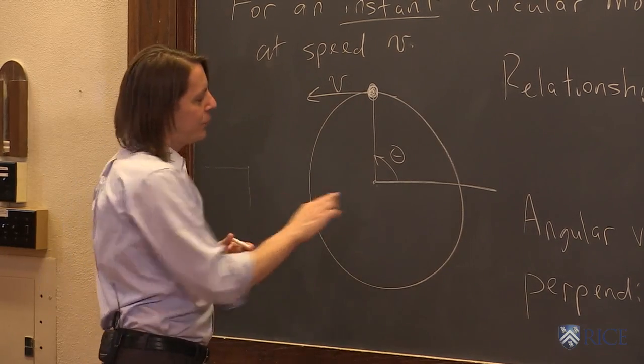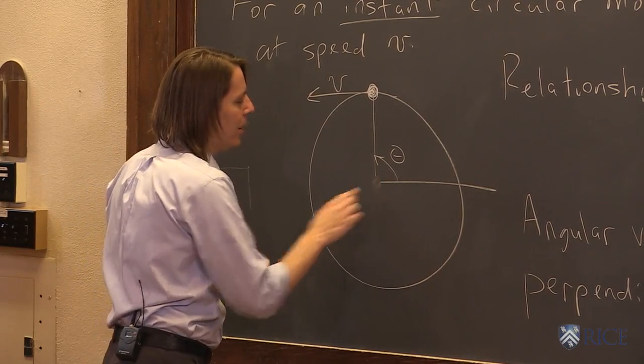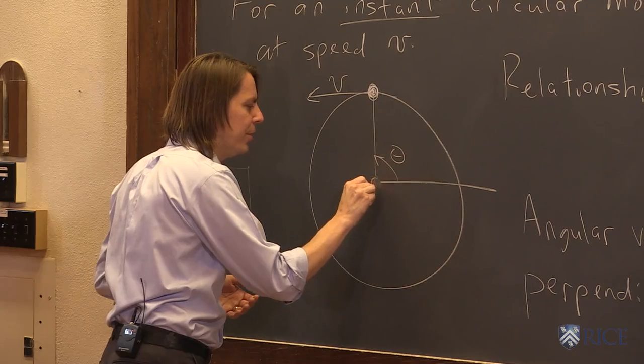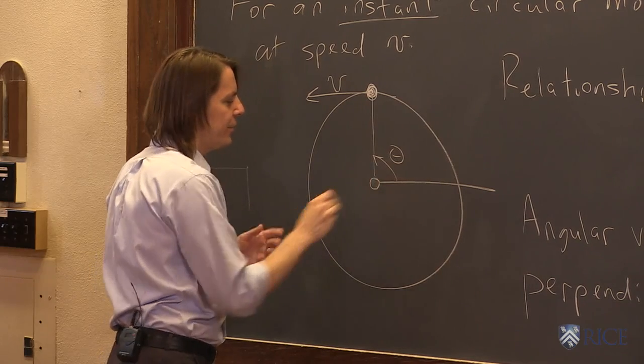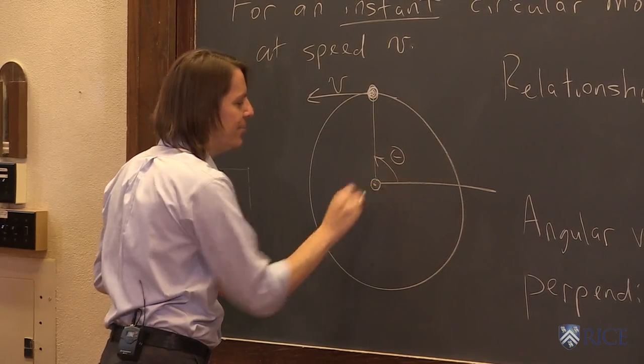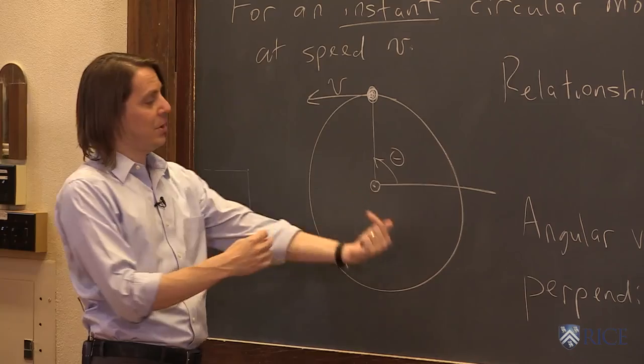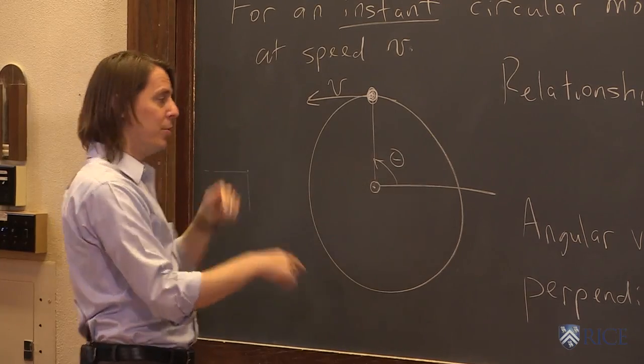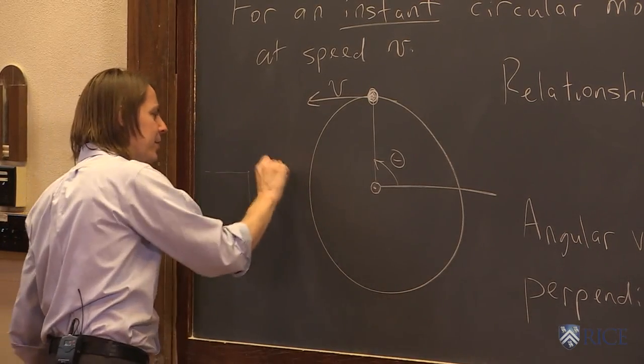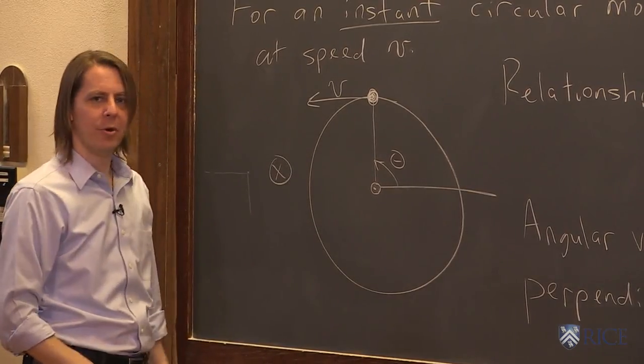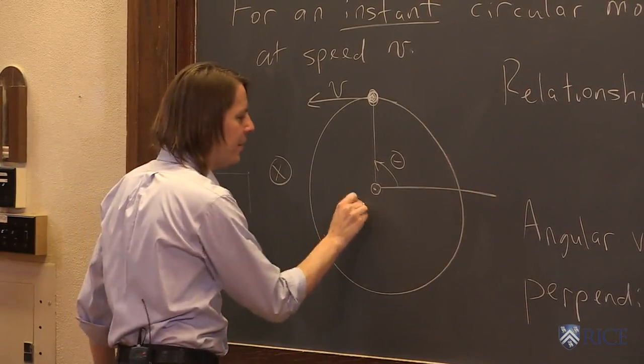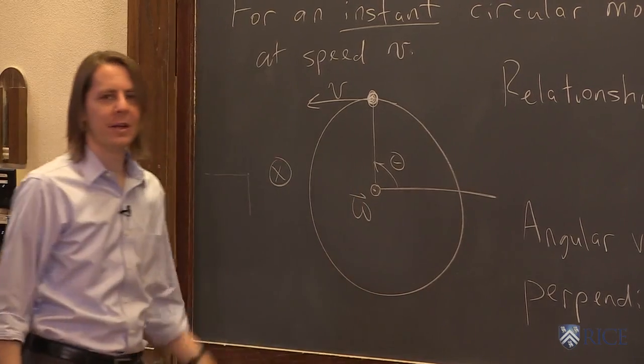So if I was going to draw omega, I would draw a vector sticking out of the board. This is how you draw a vector sticking out of the board. It looks like the tip of an arrow. If you think of a vector as an arrow, then when it comes at you, you see the tip. When it goes into the board away from you, you see the feathers. So that's a vector going into the board. This is the vector omega coming out of the board.